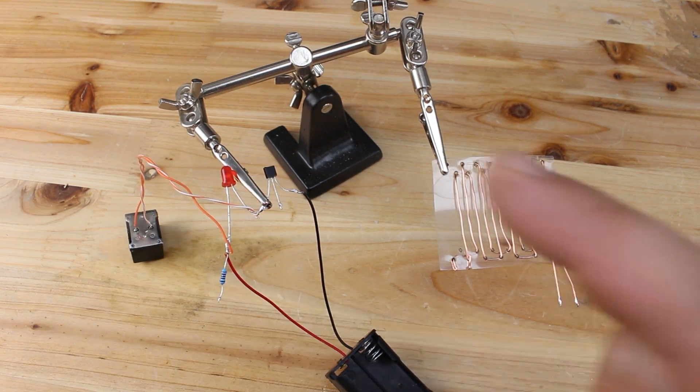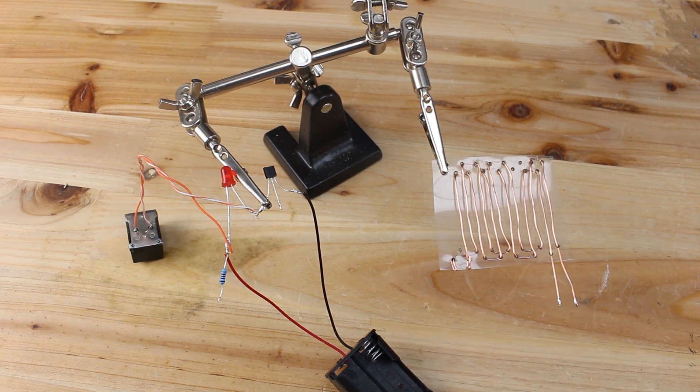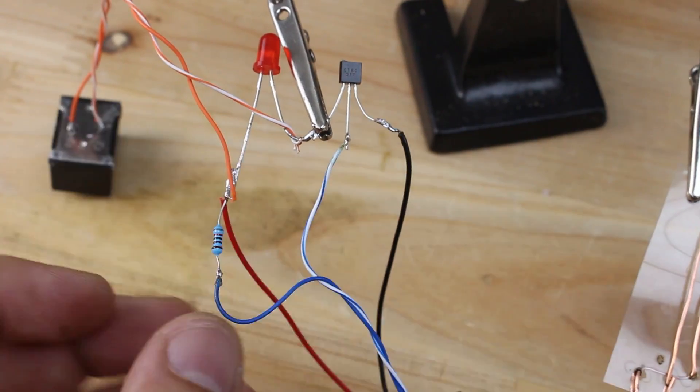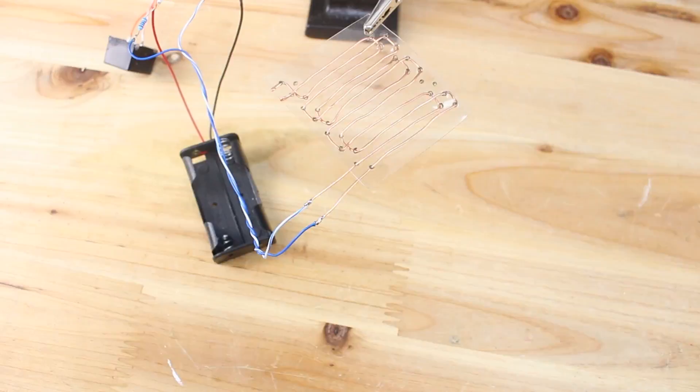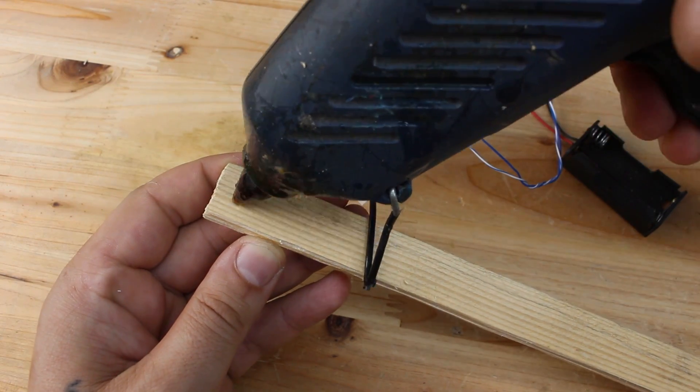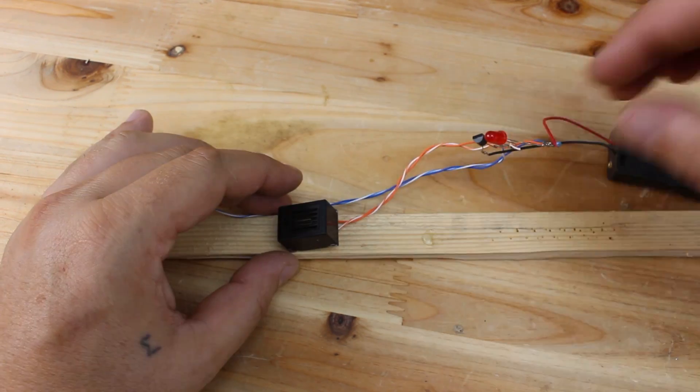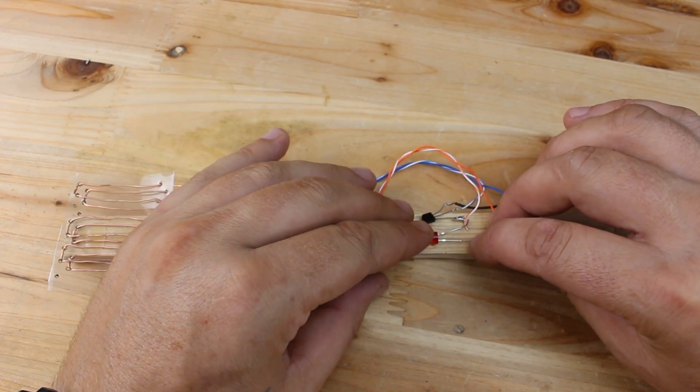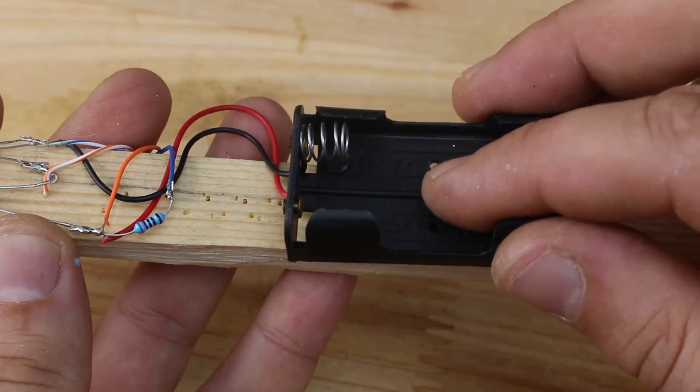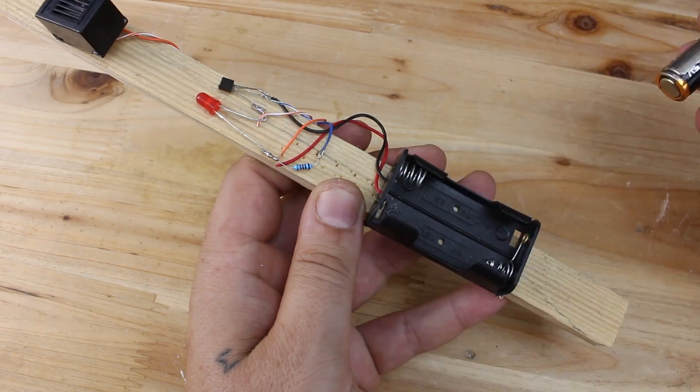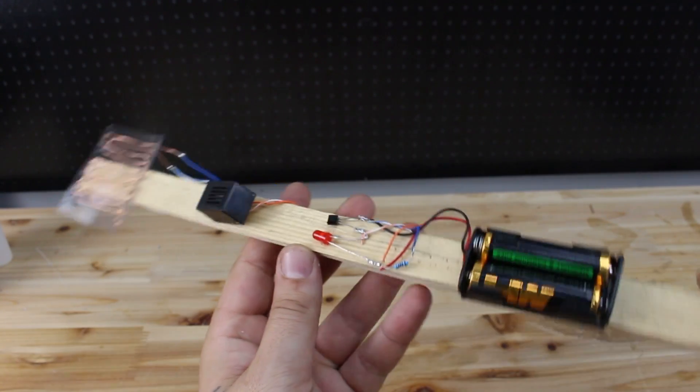Now, on the resistor and on base of the transistor, we're going to solder the wires to the sensor. The rain sensor is finished and now we're going to test it.